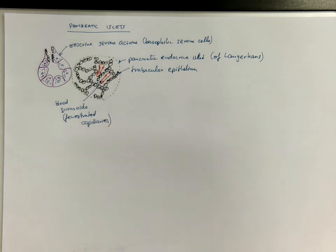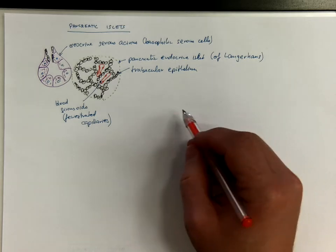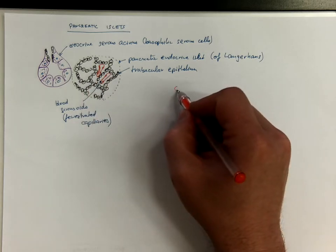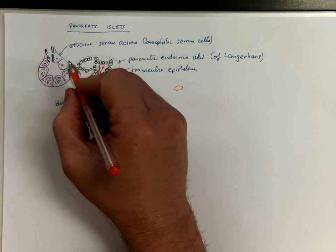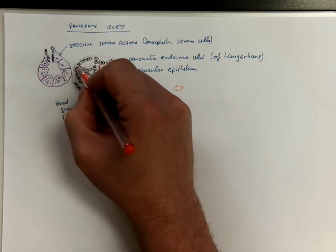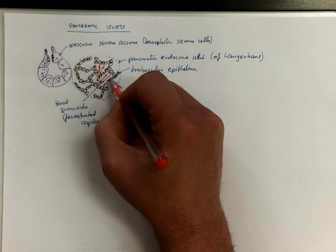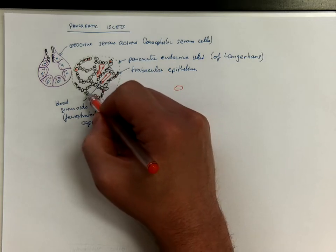And there are various cell types here. The most frequent being the B or beta cells. But let's start, according to the alphabet, with the A cells. The A cells occur mostly on the periphery of the islet.